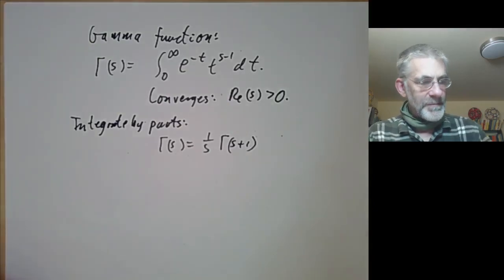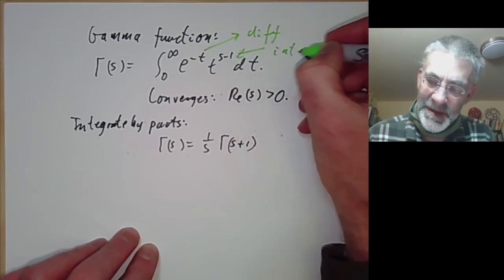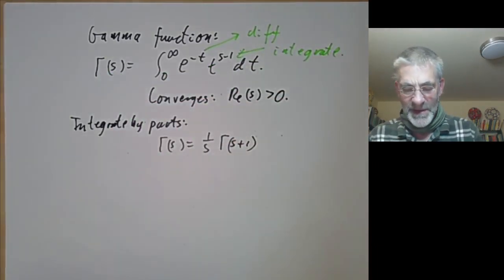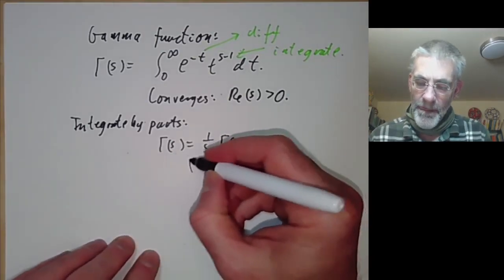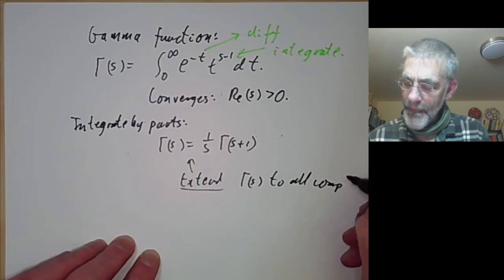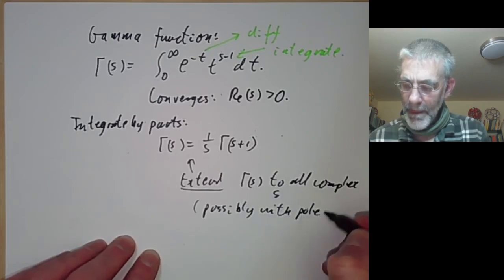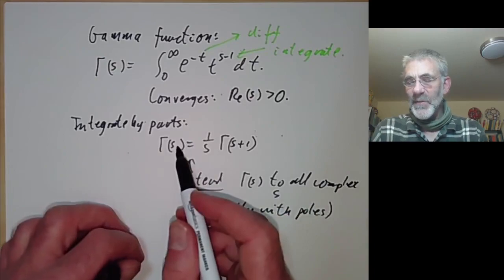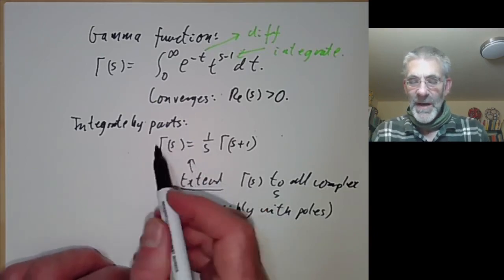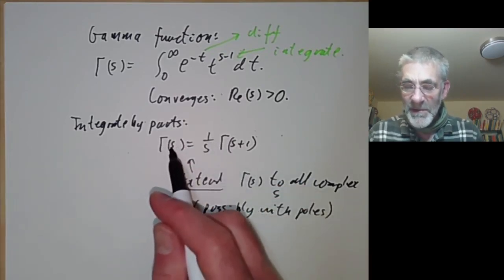What you do is find that Γ(s) = (1/s)·Γ(s+1), by differentiating t^{s+1} and integrating e^{−t} in the integration by parts. This relation between Γ(s) and Γ(s+1) can be used to extend Γ(s) to all complex s, possibly with poles. To extend it to s less than one you divide by s, which extends it to the real part of s greater than minus one, and iterating this gives it as a meromorphic function.